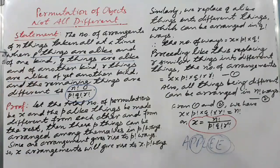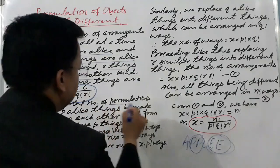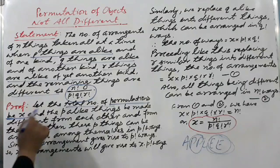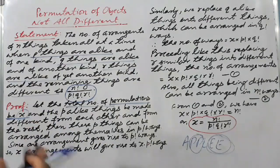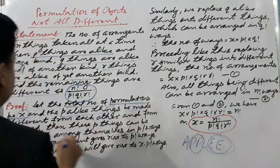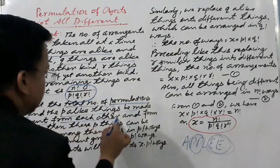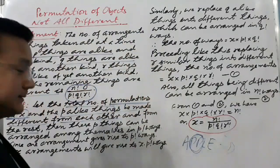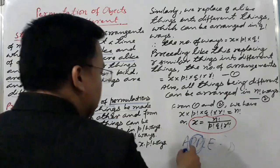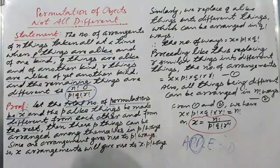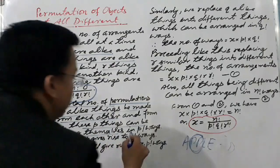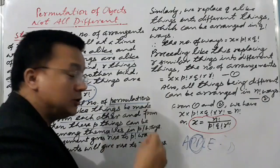Let the total number of permutations — meaning different arrangements — be x. So the required number of different arrangements is x. Now, p alike things, if we make them different from each other and from the rest, then p things can be arranged among themselves in p factorial ways.